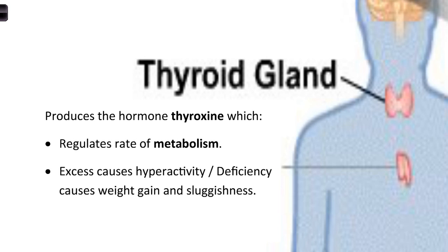Metabolism regulates some of those chemical reactions, especially those involved in respiration. Respiration is one of the processes in MRS GREN - basically where we use oxygen to burn our food energy, something like glucose in the blood, to produce carbon dioxide and water. So thyroxine is a hormone that regulates our rate of metabolism.